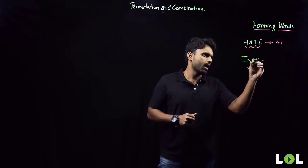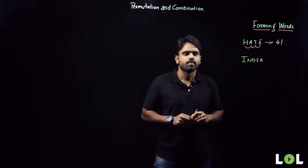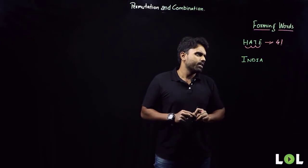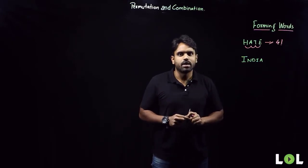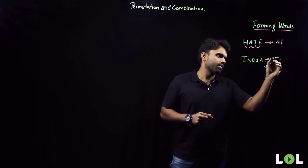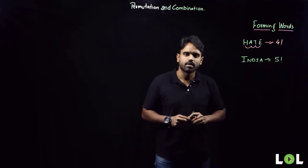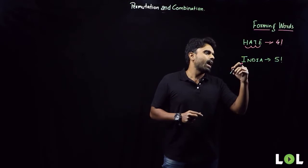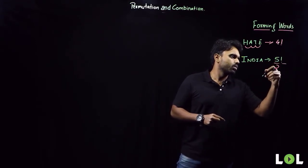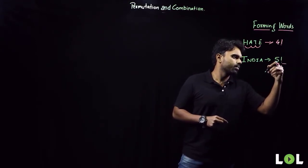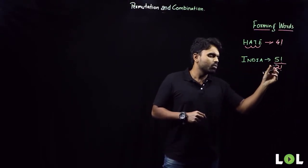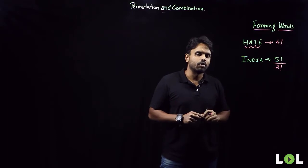If I take the word INDIA — I, N, D, I, A — how many letters do I have? Five letters. Five letters can be rearranged in five factorial ways. But I also have to divide by two factorial. Why am I dividing by two factorial? We'll understand that in a moment.